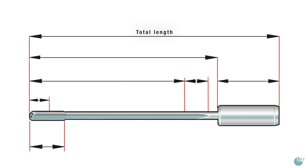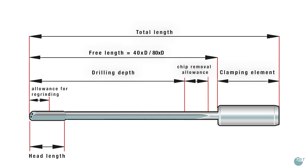The calculation of the total length of deep hole drills is carried out as follows. The length of the clamping element, the maximum theoretical drilling depth plus chip removal allowance and allowance for regrinding result in the total length of the tool. The free length thereby must not exceed 40 times D or 80 times D for the follow-up tool.